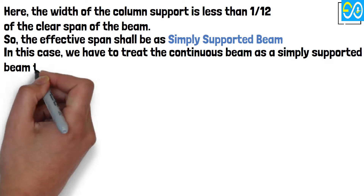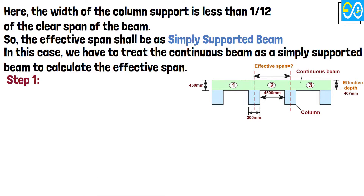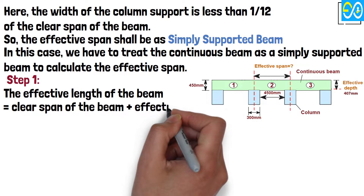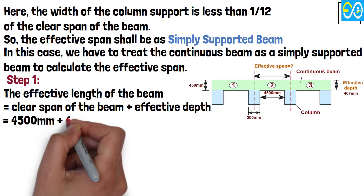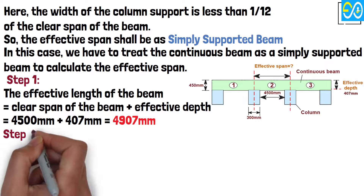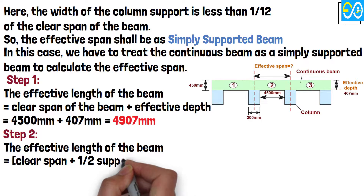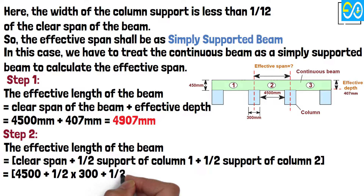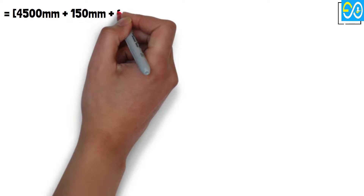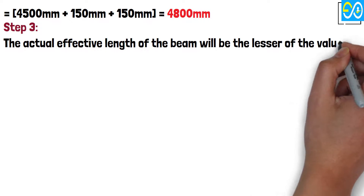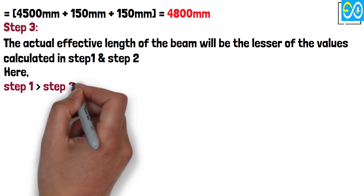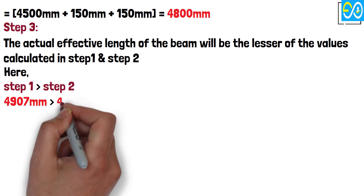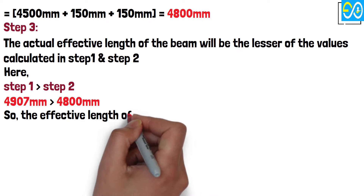We have to treat the continuous beam as a simply supported beam to calculate the effective span. Step 1: Effective length = clear span + effective depth = 4,500 mm + 407 mm = 4,907 mm. Step 2: Effective length = clear span + half support width of column 1 + half support width of column 2 = 4,500 mm + 150 mm + 150 mm = 4,800 mm. Step 3: The actual effective length is the lesser of step 1 and step 2. Since 4,907 mm > 4,800 mm, the effective length of the beam is 4,800 mm.